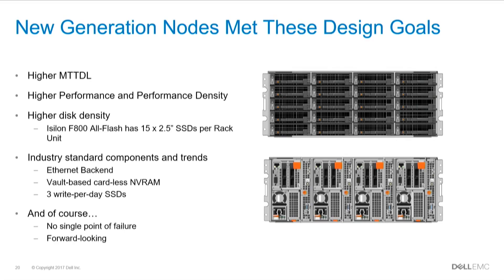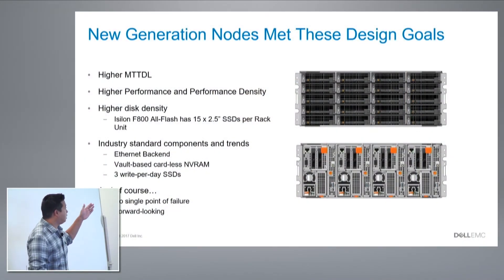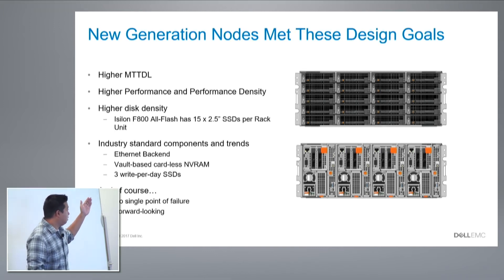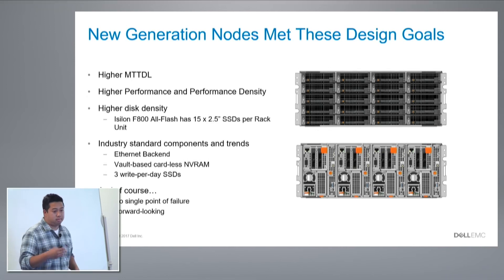The back-end and front-end networks are separate and segregated. In summary, from the earlier design goals, you can see that higher MTDL, higher performance, and higher performance density are achieved, along with meeting industry standards with Ethernet back-end and cardless NVRAM, and being able to handle anything in the future.